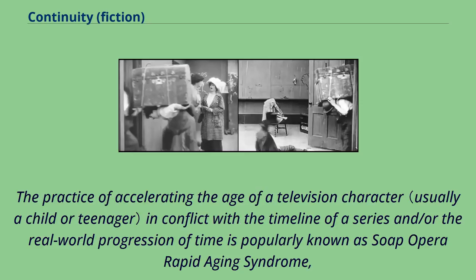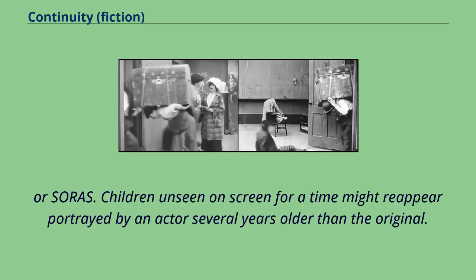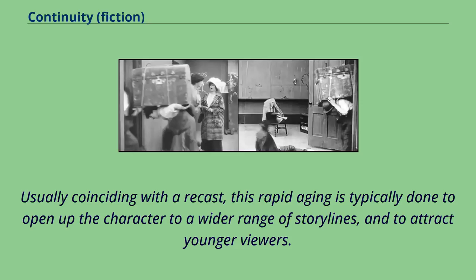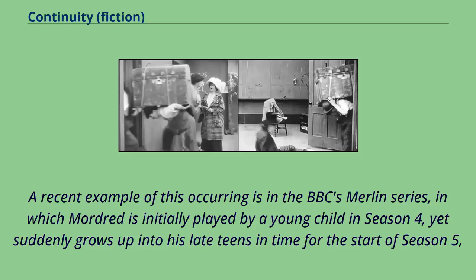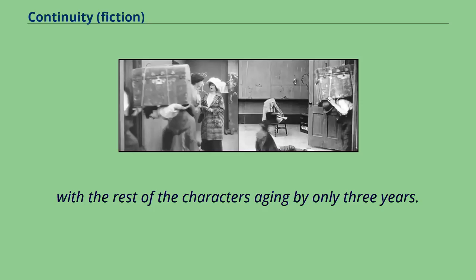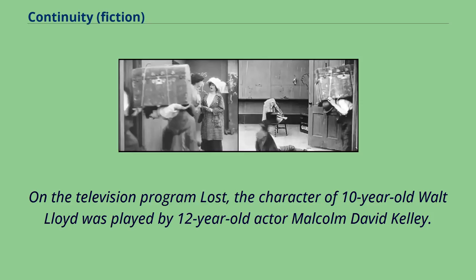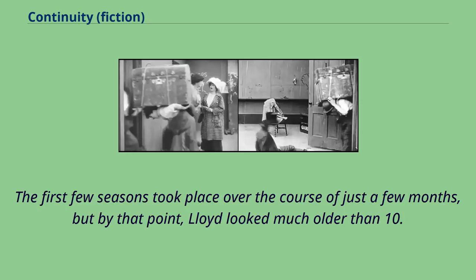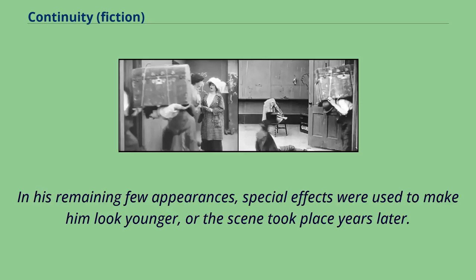The practice of accelerating the age of a television character in conflict with the timeline of a series and/or the real-world progression of time is popularly known as Soap Opera Rapid Aging Syndrome, or SORAS. Children unseen on screen for a time might reappear portrayed by an actor several years older than the original. Usually coinciding with a recast, this rapid aging is typically done to open up the character to a wider range of storylines and to attract younger viewers. A recent example is the BBC's Merlin series, in which Mordred is initially played by a young child in season 4, yet suddenly grows up into his late teens in time for the start of season 5, with the rest of the characters aging by only 3 years. The reverse can also happen: on Lost, the character of 10-year-old Walt Lloyd was played by 12-year-old actor Malcolm David Kelly. The first few seasons took place over just a few months, but by that point Lloyd looked much older than 10. In his remaining few appearances, special effects were used to make him look younger, or the scene took place years later.